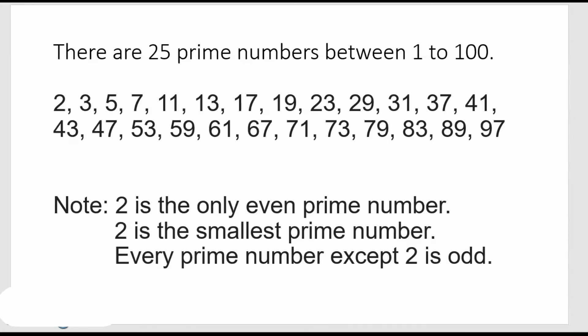Now, there are 25 prime numbers between 1 to 100. I have listed those numbers here. Let's start with 2, 3, 5, 7, 11, 13, and then you have 83, 89, 97. So these are the 25 prime numbers.